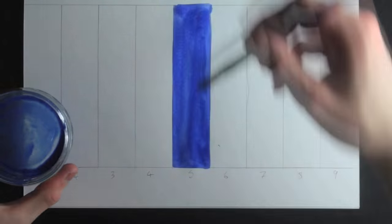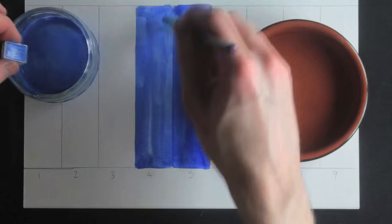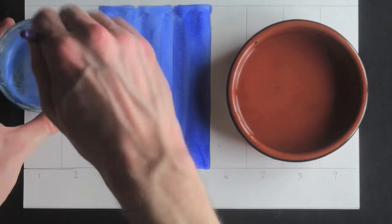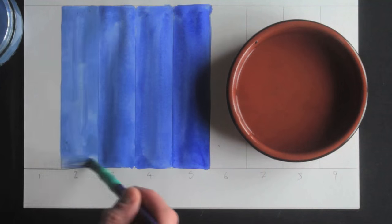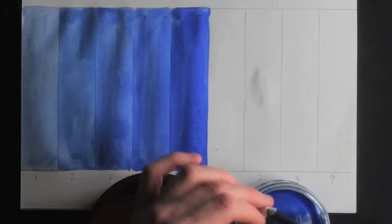Tints are light, like mint - add white. Shades, men in black, are dark - add black. Add a little white to make a tint, add a little more to make all four. Add a little black to make a shade, add a little more to make all four.